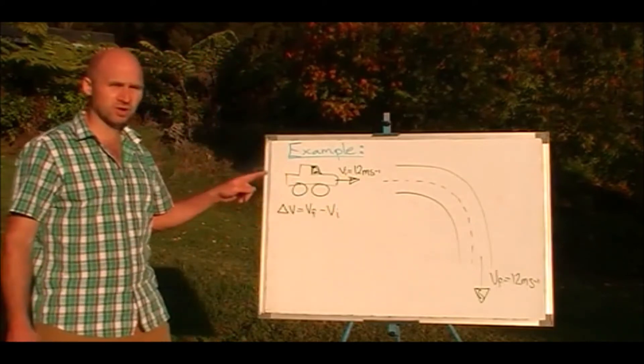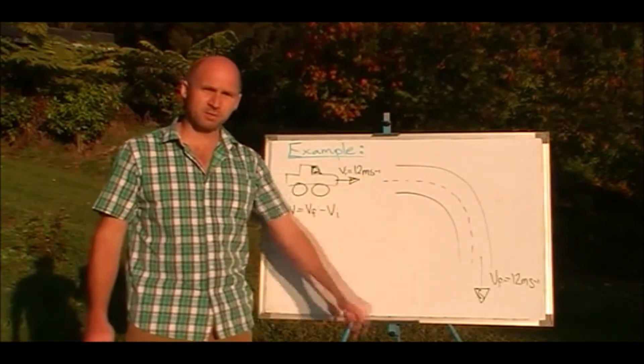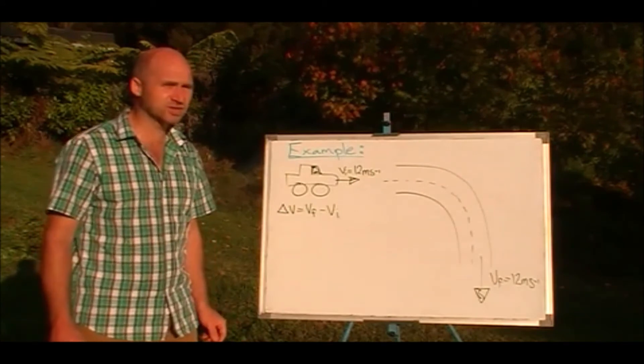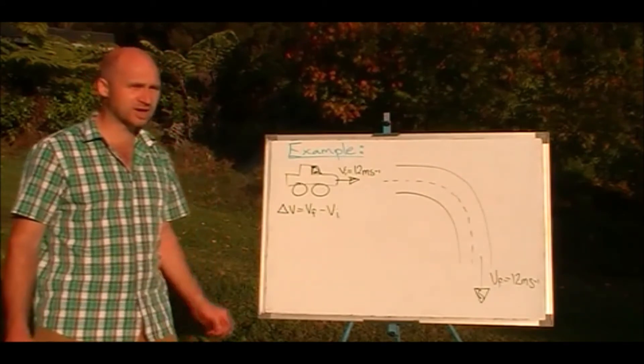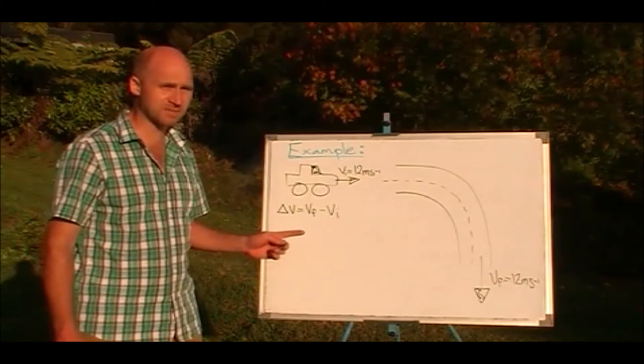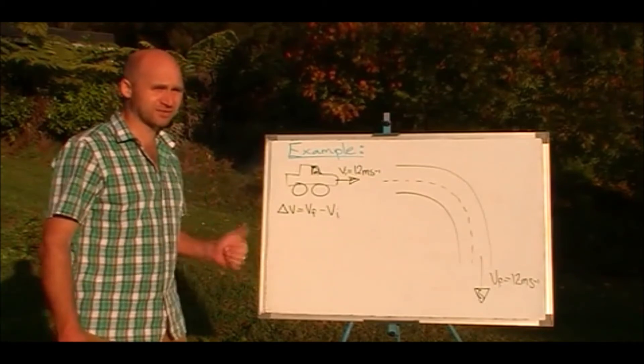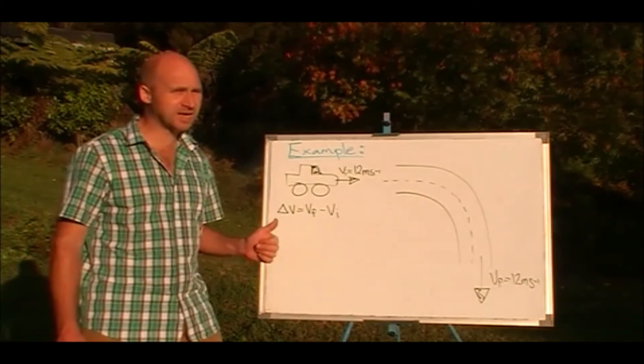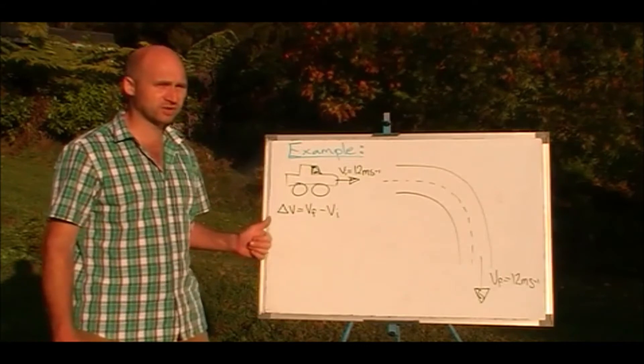because we've gone around a corner and we know that vectors have a size and a direction. So although the size of the vector has stayed the same, the direction has definitely changed. And that means we should be able to calculate a change in velocity.